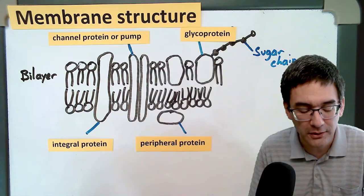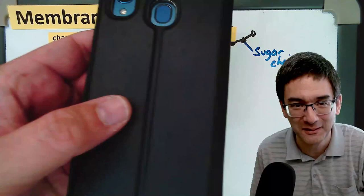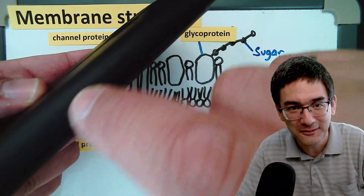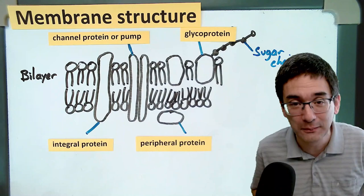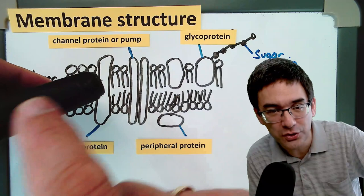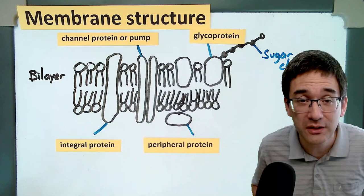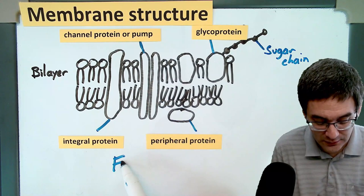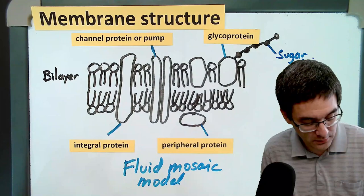One thing to be careful about: this is only a two-dimensional cross-section. A membrane is like a sheet, and we're looking at it from the side. Using my phone as an example — if this is the membrane, we're looking at it on the side, seeing only the cross-section. The inside of the membrane could be the inside of the cell, and substances can go through the channel protein. In reality it's a three-dimensional structure. The name of this type of membrane is the fluid mosaic membrane model.